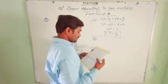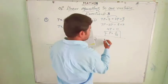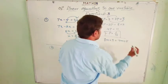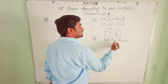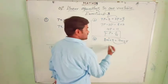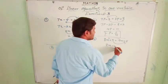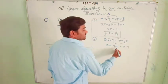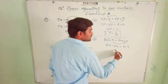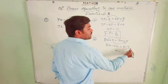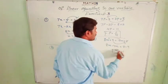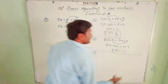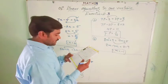The fourth question: 8m plus 9 equal to 7m plus 8. 7m will transfer to this side and plus 9 will transfer to the RHS side. 8m minus 7m equal to 8 minus 9. 8m minus 7m is 1m, and 8 minus 9 is minus 1. So we got m equal to minus 1.